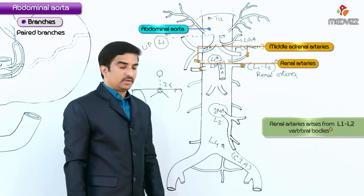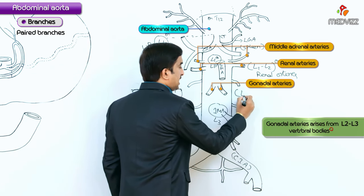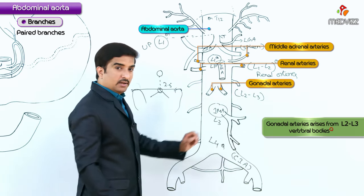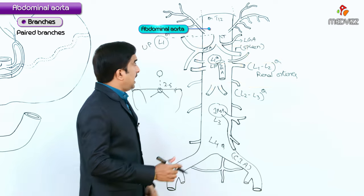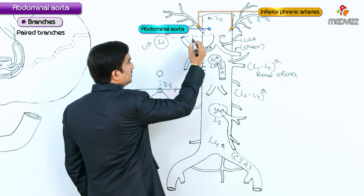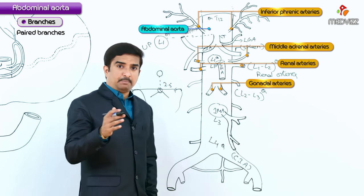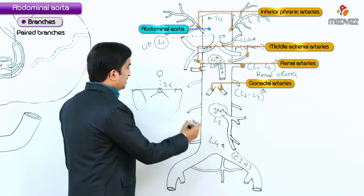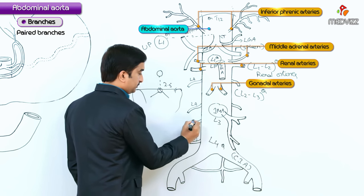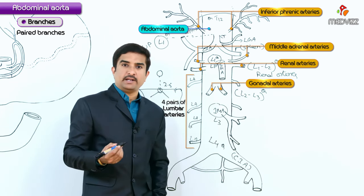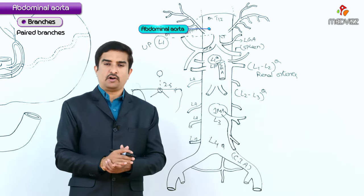The next paired branches are the gonadal arteries — also called testicular or ovarian arteries — with origin between vertebral bodies L2 and L3. Other important paired branches include the inferior phrenic arteries, which supply the inferior surface of the diaphragm, and four pairs of lumbar arteries. These constitute the paired branches of the abdominal aorta.